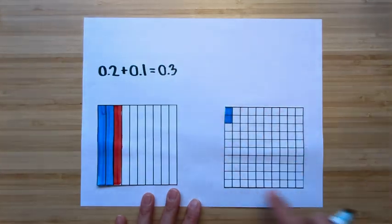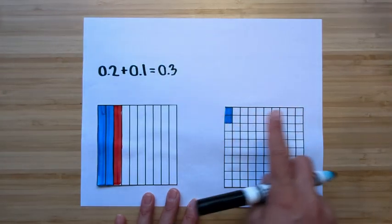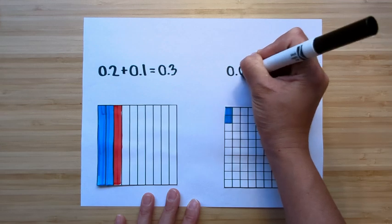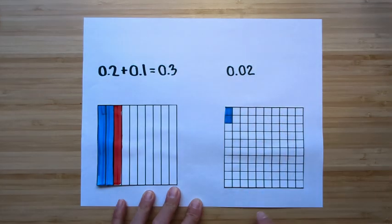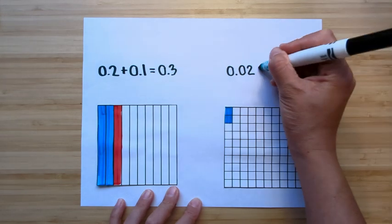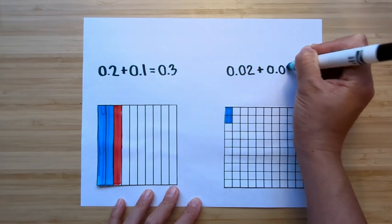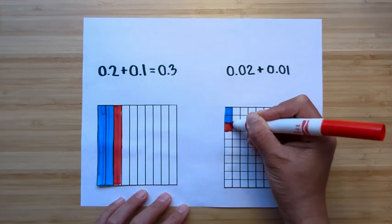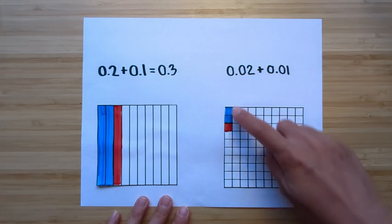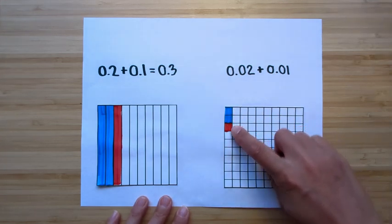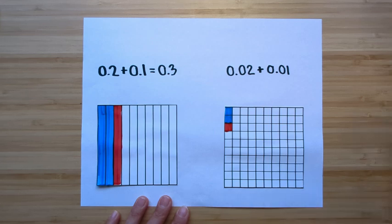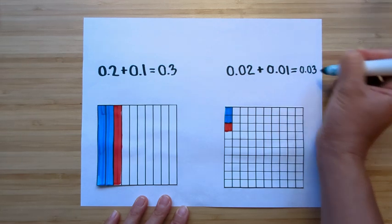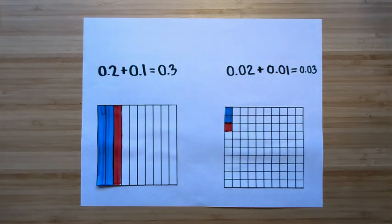Now let's look at hundredths. This whole is divided up into one-hundred pieces, so it's hundredths. I have two out of the one-hundred pieces shaded, so this is two-hundredths. Let's say I want to add one-hundredth to my two-hundredths — I'm simply going to shade in one-hundredth. Two-hundredths plus one-hundredth — it's very small compared to the whole — equals three-hundredths.